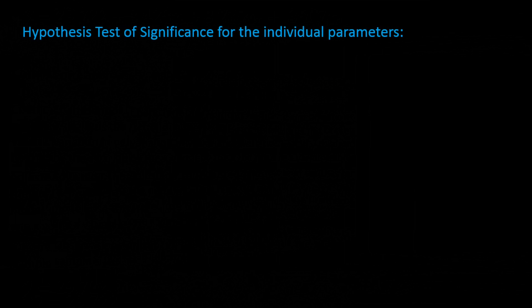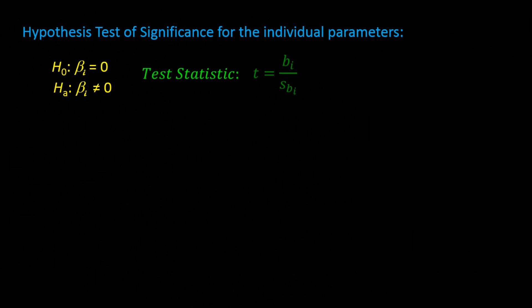Next, we can test for the individual significance of each of the beta parameters. Specifically, we would like to test if any of the slopes is equal to zero. Remember, if the slope is equal to zero, then there is no relationship between x and y. For our example, we can test beta-1, beta-2, and beta-3. The test statistic is b_i over s_b_i, using subscript i as a generic representation. We will use the computer printout to get our test statistic. The rejection rule is the same as always: reject the null hypothesis if the p-value is less than or equal to alpha.